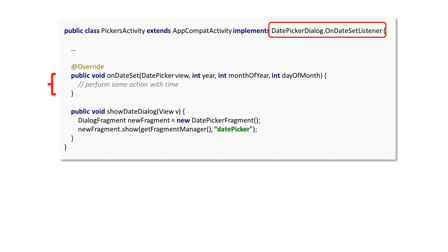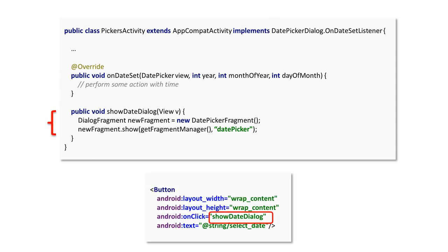Again, in the host activity, you need to implement the onDateSet method from the DatePickerDialog OnDateSetListener. This is the place where you can react to a date set event. To display the DatePickerDialog, you can create a simple button with an onClick callback, which will instantiate and show the DatePicker fragment.